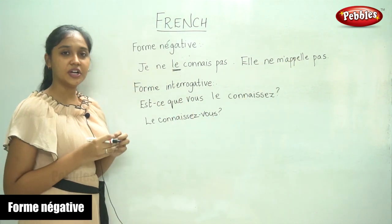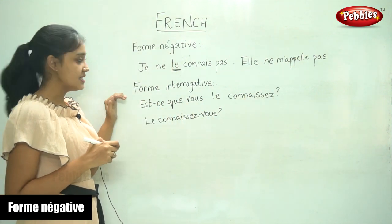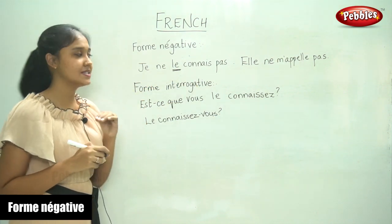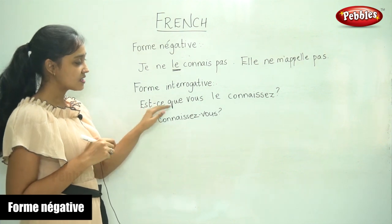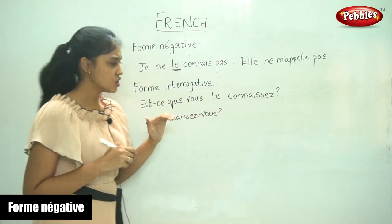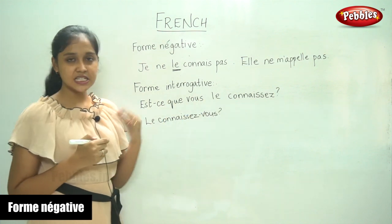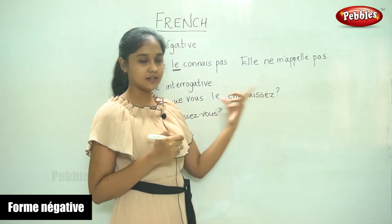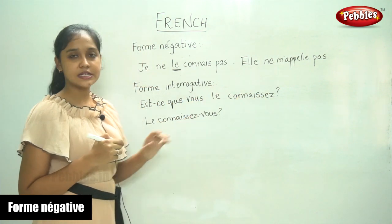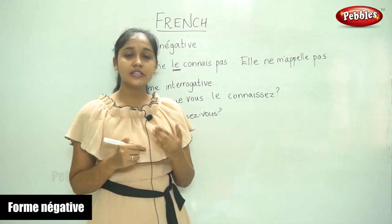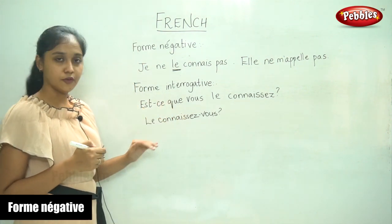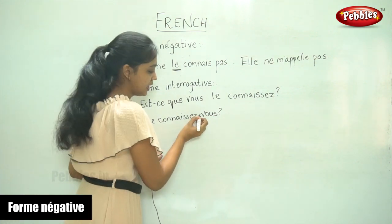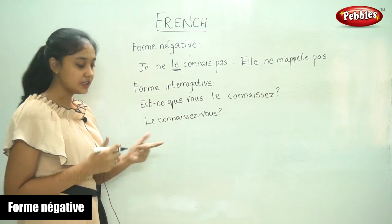The next one is 'la forme interrogative', the interrogative form — we are going to write questions with this. For example: 'Est-ce que vous la connaissez?' — we use the est-ce que form. It is a simple sentence with a question mark. You can also write this question in the inverted form: 'La connaissez-vous?' — with a hyphen in the inverted form.